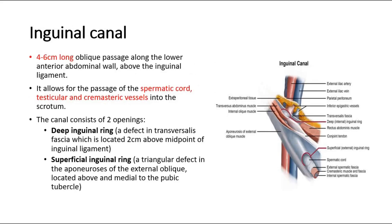The inguinal canal is a four to six centimeters long oblique passage along the lower anterior abdominal wall, above the inguinal ligament. It allows for the passage of the spermatic cord and testicular and cremasteric vessels into the scrotum. The canal consists of two openings: the deep inguinal ring, a defect in transversalis fascia located two centimeters above the midpoint of the inguinal ligament, and the superficial inguinal ring, a triangular defect in the aponeurosis of the external oblique, located above and medial to the pubic tubercle.